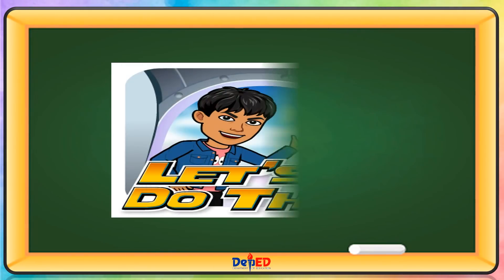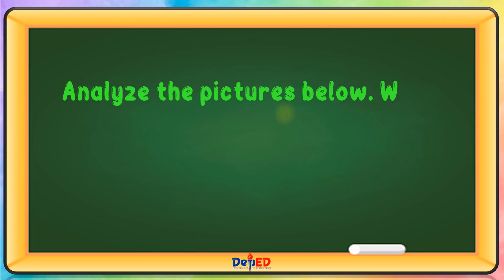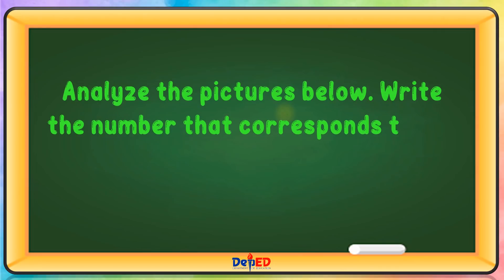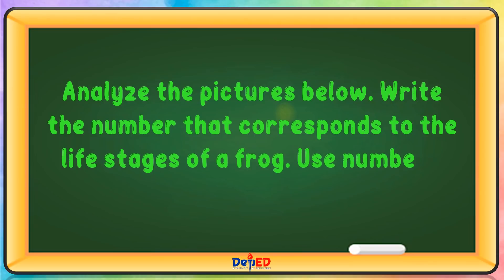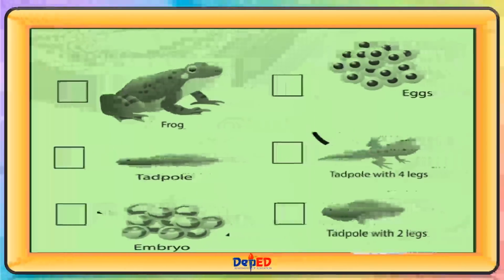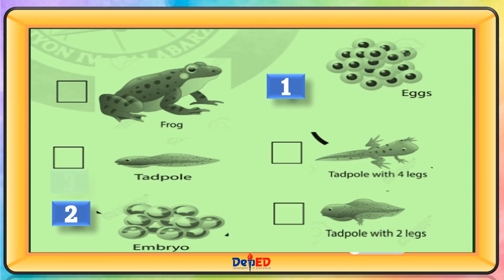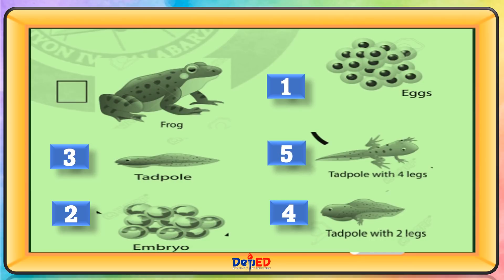Let's do this! Analyze the pictures below. Write the number that corresponds to the life stages of a frog. Use number one for the first stage and so on. One is egg. Two is embryo. Three is tadpole. Four is tadpole with two legs. Five is tadpole with four legs. Six is frog.